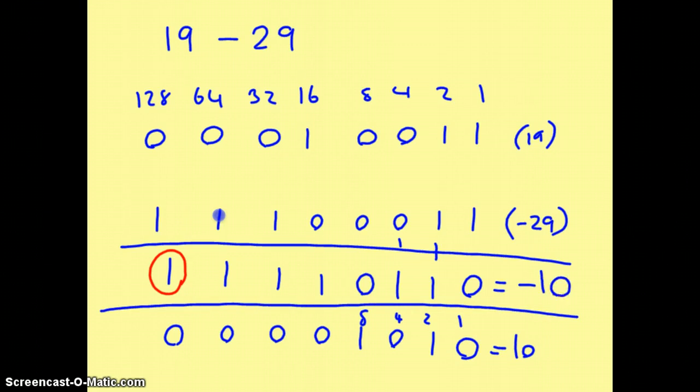Let's check: 19 minus 29 equals minus 10. That is correct. So that shows you how to do subtraction using binary numbers.